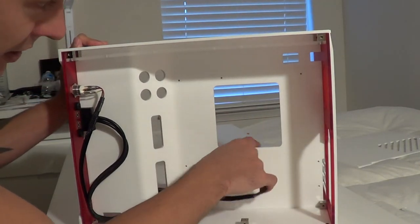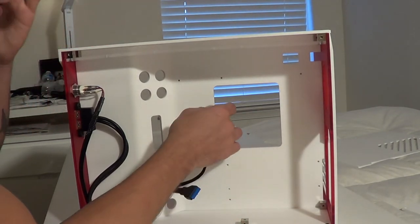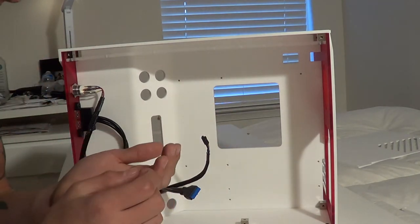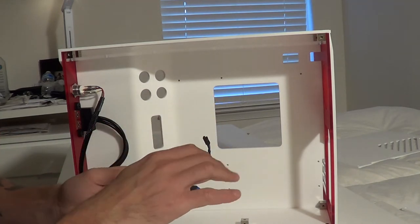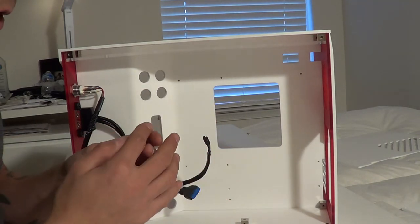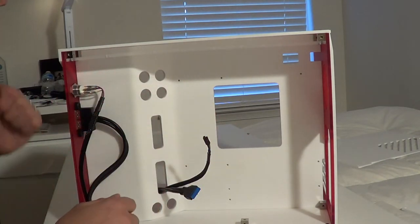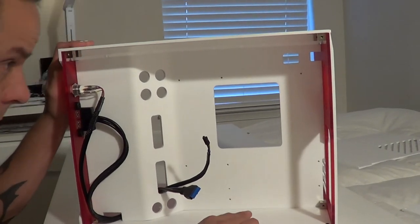As you can see, we still have the nice CPU cut out. One thing to remember with this case is it is machined acrylic, so it does have sharp edges everywhere. Just from putting this together, I don't have any cuts that actually broke my outer layer of skin and caused me to bleed, but there are definitely gouges in my hands from working with this case.